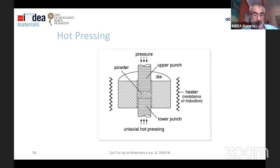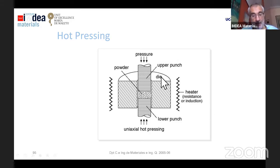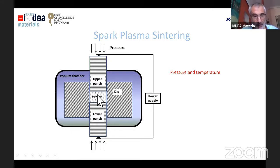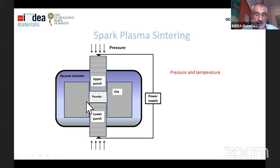Another way to achieve full density is hot pressing, in which you apply pressure and temperature simultaneously, but in a uniaxial way. You can do this by enclosing all the pressing system in a furnace, or by applying temperature through a current passing through the powder by Joule effect. If we use a pulsed current application, we have the so-called spark plasma sintering. The negative aspect is that you cannot produce complex shapes — usually you have blanks that must be machined later to obtain the final part.